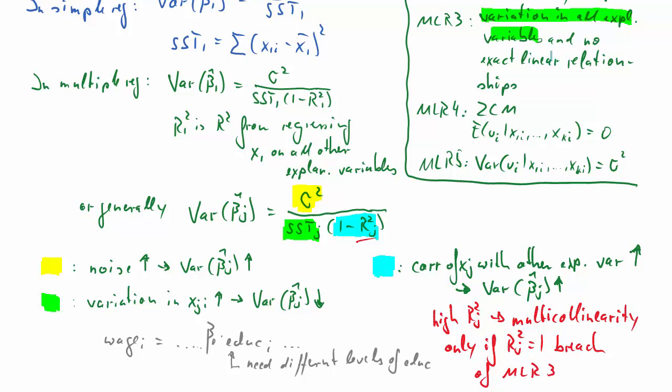If that was the case, that blue factor would become 1 minus 1 equals 0. And we cannot divide by 0, so you can see where the problem lies.